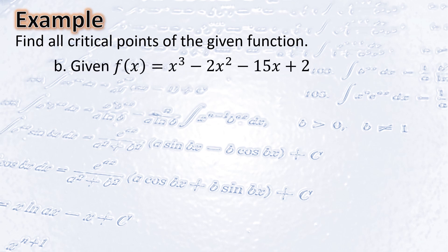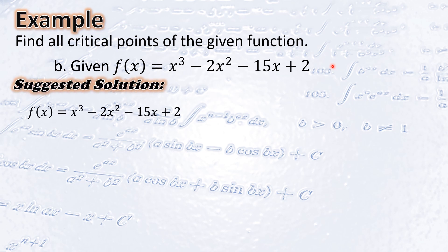Let's have another function: f(x) = x³ − 2x² − 15x + 2. As in example (a), f(x) is a differentiable function for all values of x. Finding f′(x): the derivative of x³ is 3x², the derivative of −2x² is −4x, and the derivative of −15x is −15. So f′(x) = 3x² − 4x − 15.